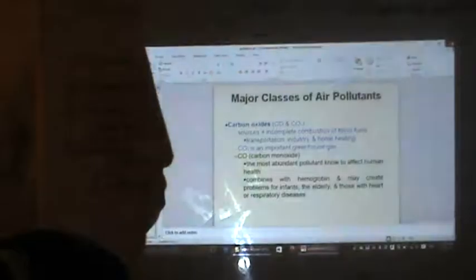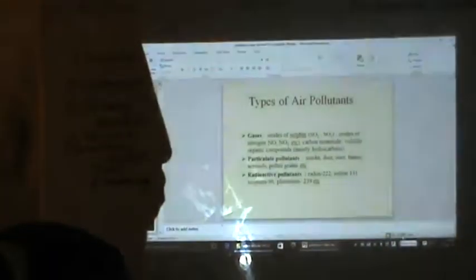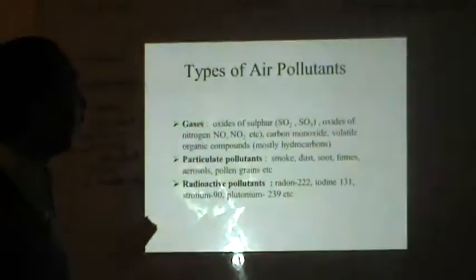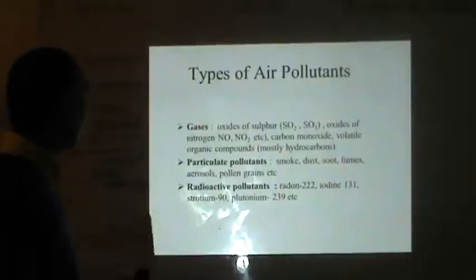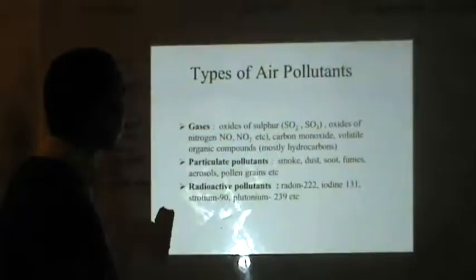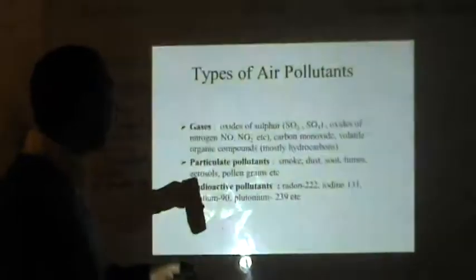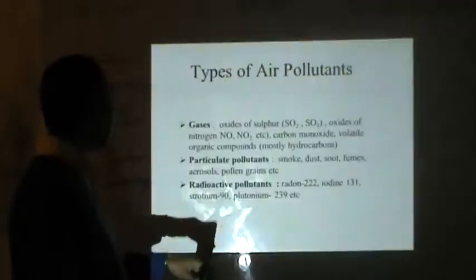Types of air pollutants include gases such as SO2 and SO3, oxides of nitrogen (NO and NO2), carbon monoxide, and volatile organic compounds — mostly hydrocarbons. Then we have particulate pollutants: smoke, dust, soot, fumes, aerosols, and foreign grains.